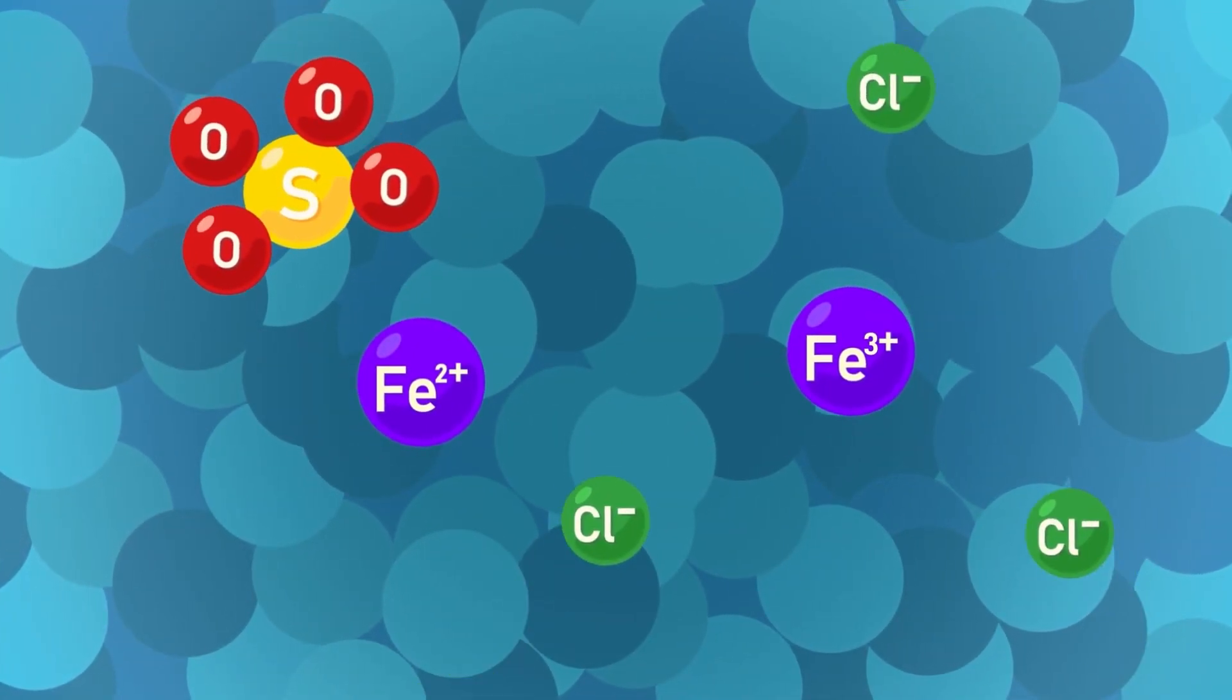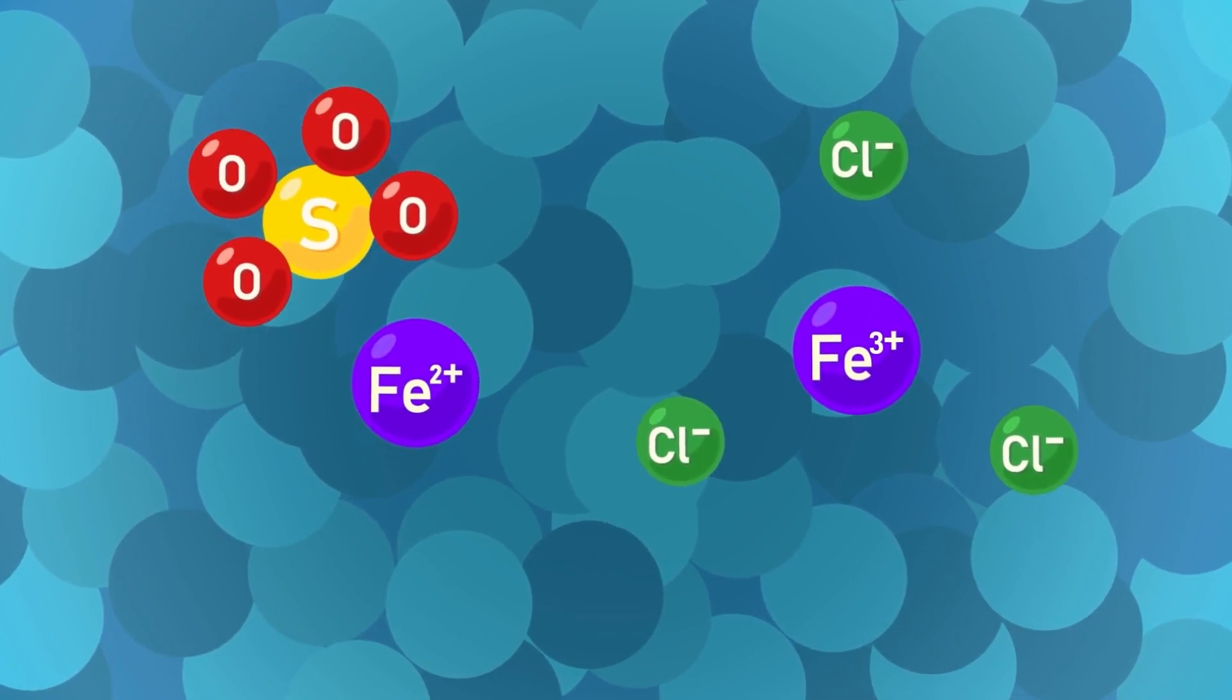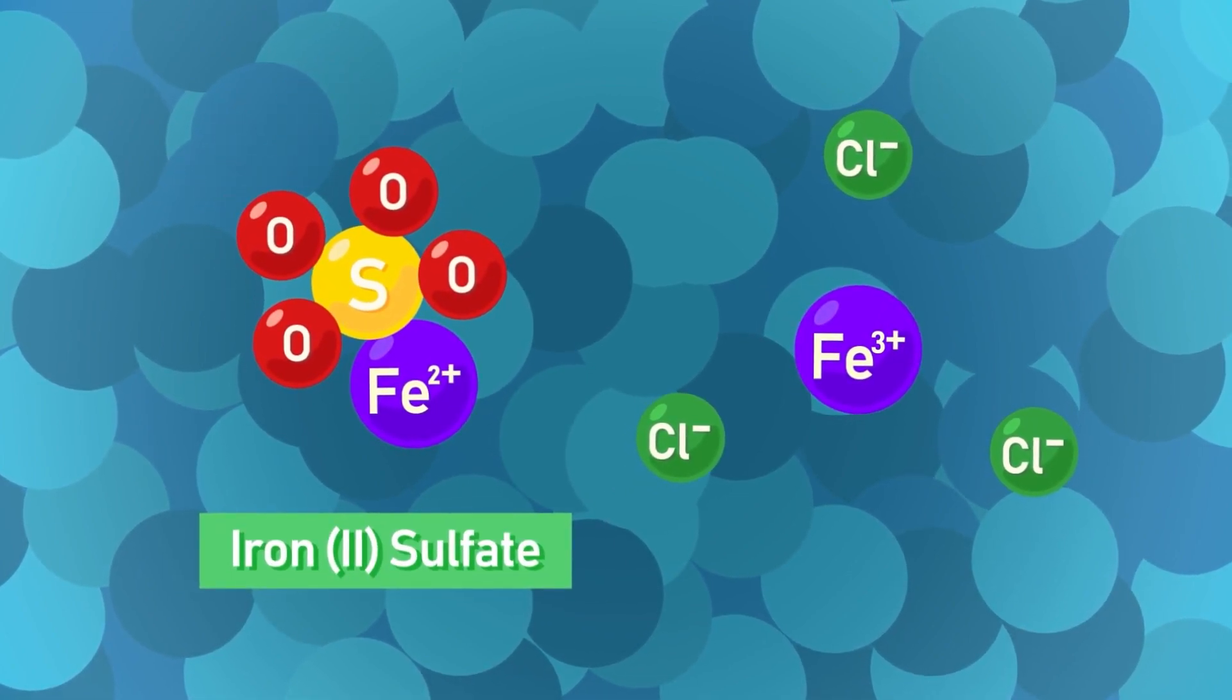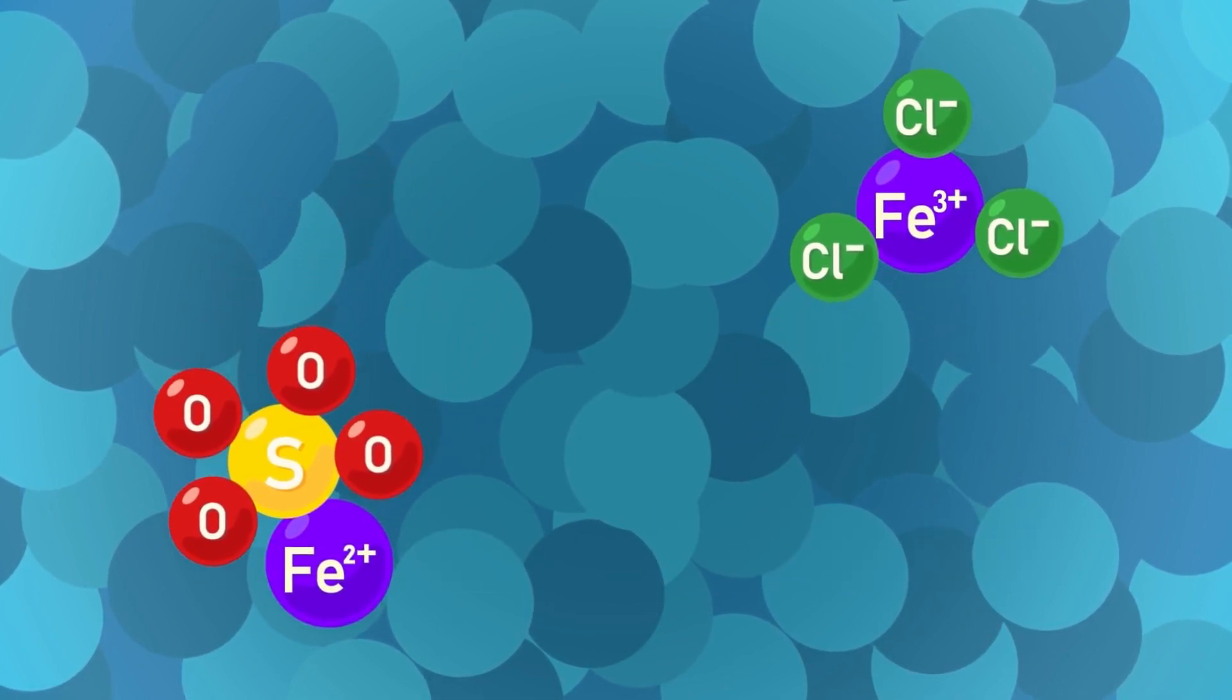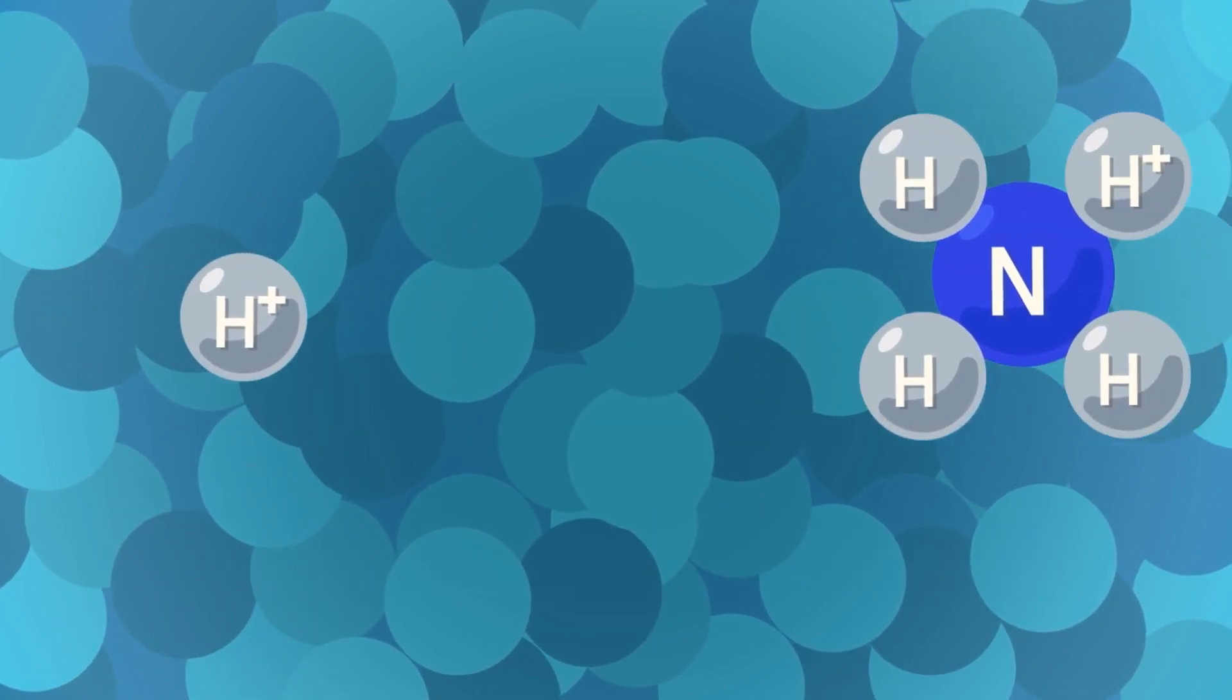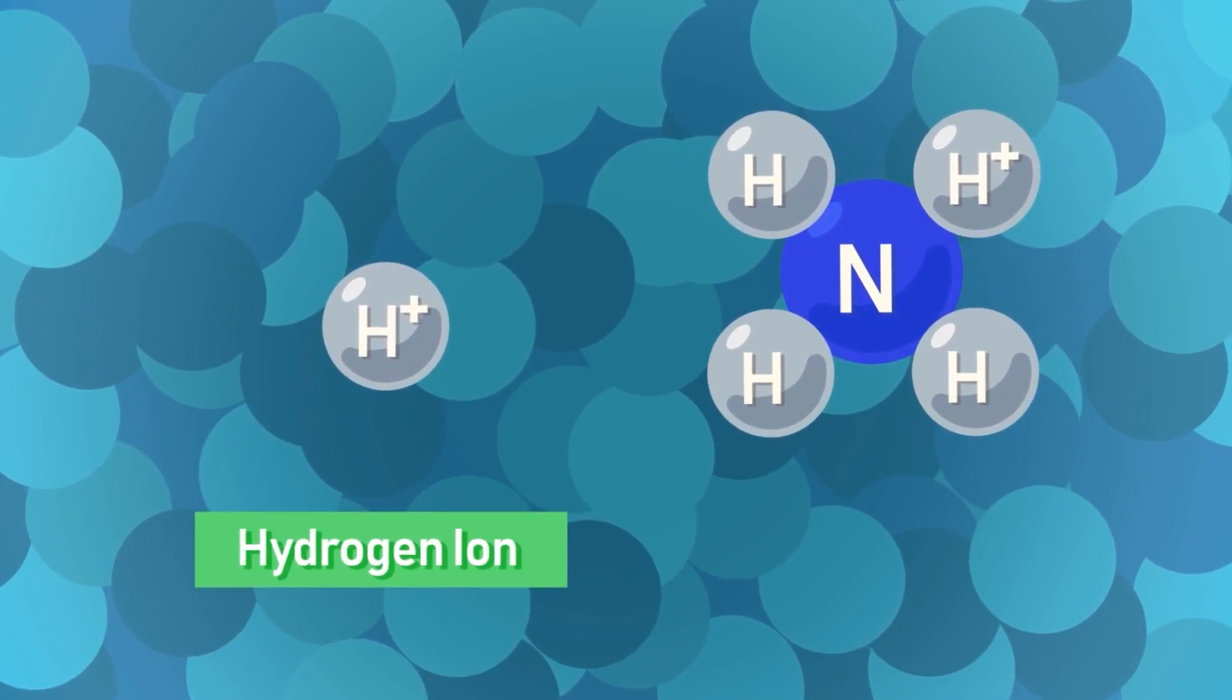For these metals, the charge on the ion is shown in the name of the compound and can be written as iron(II) sulfate or iron(III) chloride. There are a few non-metallic cations as well. Examples of this include hydrogen ion H+ and ammonium ion NH4+.